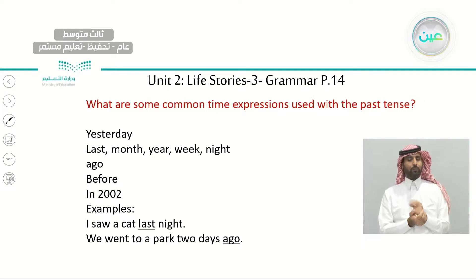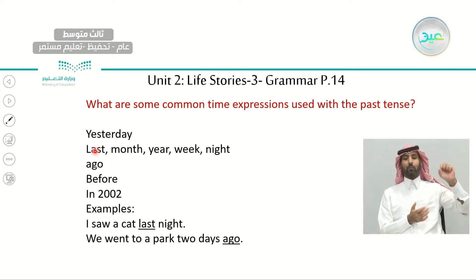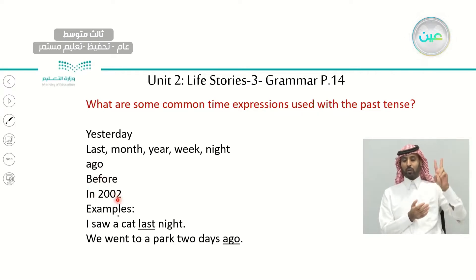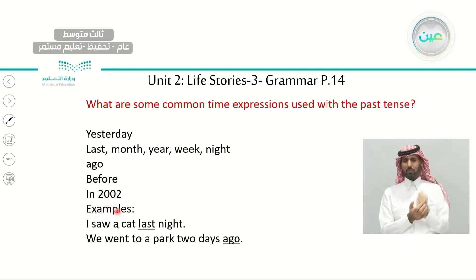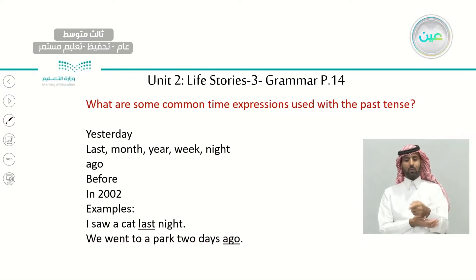We have some common time expressions we use with the past tense. These include: yesterday, last month, last year, last week, last night. We also have 'ago,' like three years ago, four years ago. We have 'before,' and specific years like in 2002 or in 1998. For example: I saw a cat last night. We went to a park two days ago.